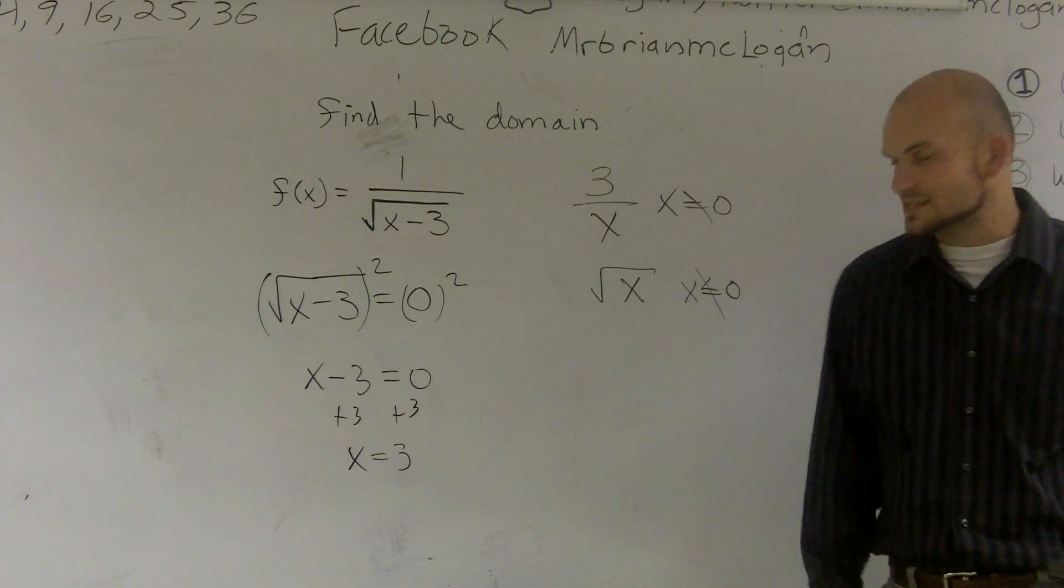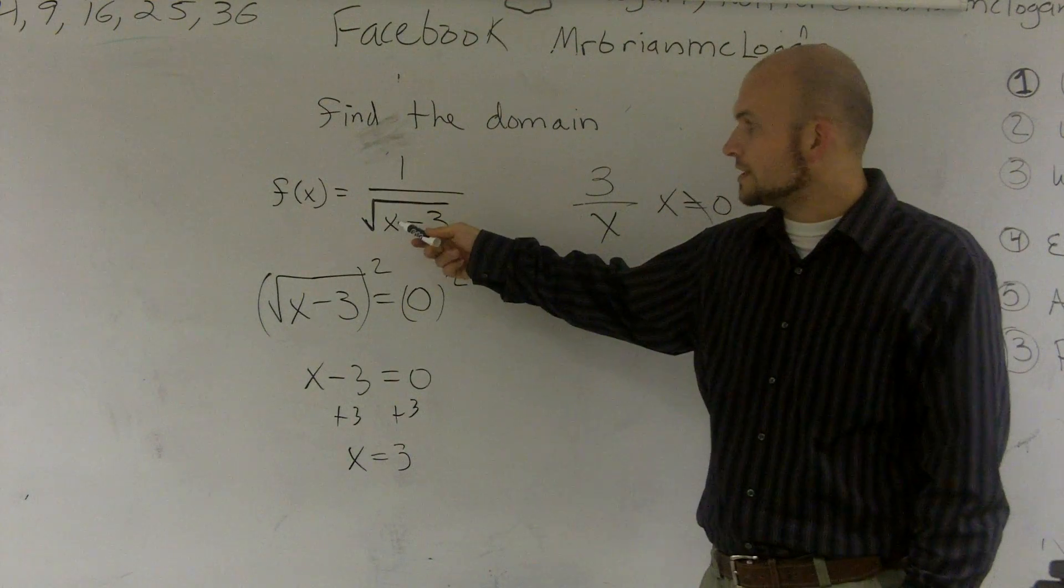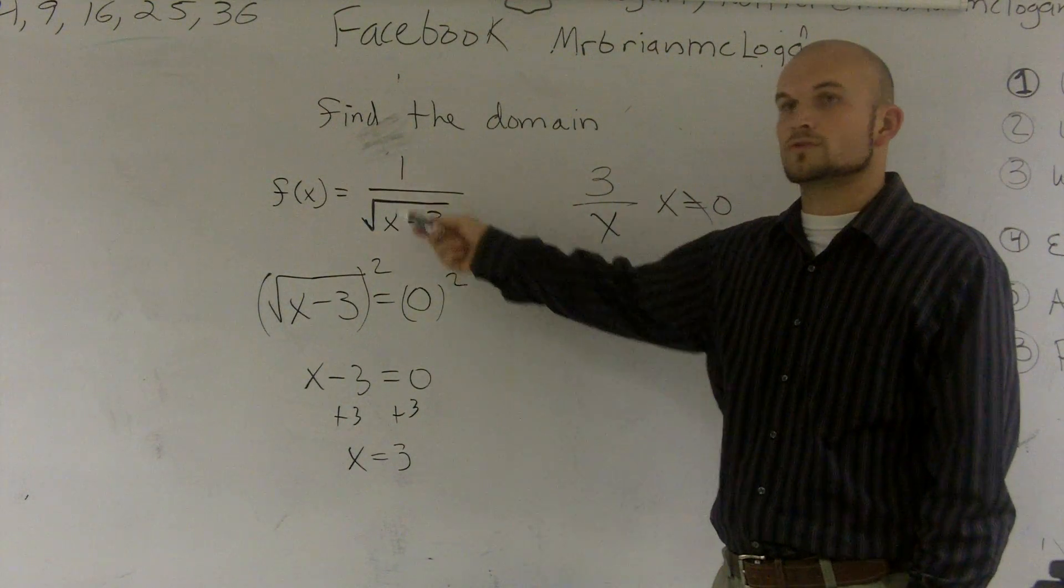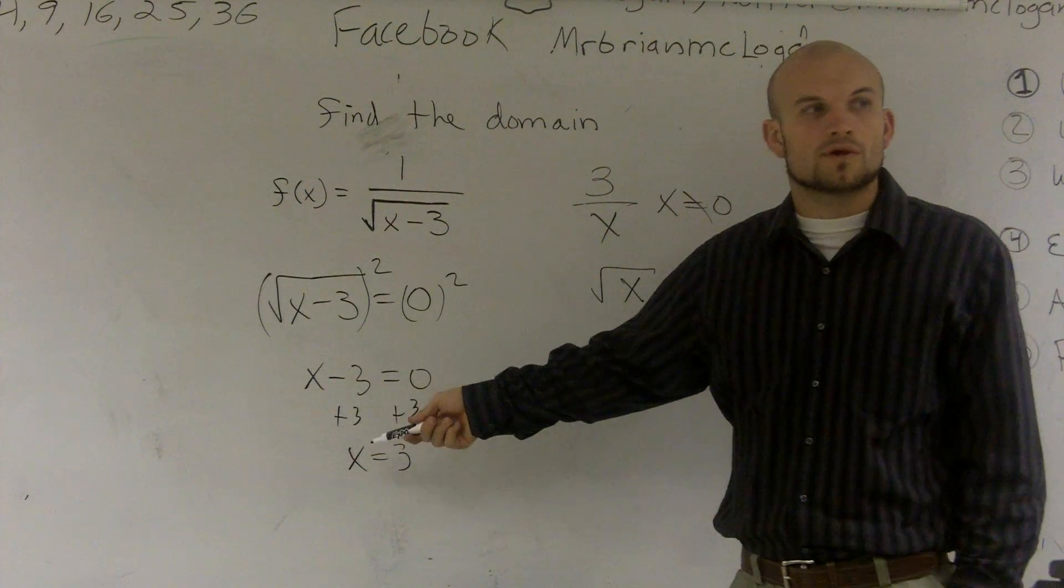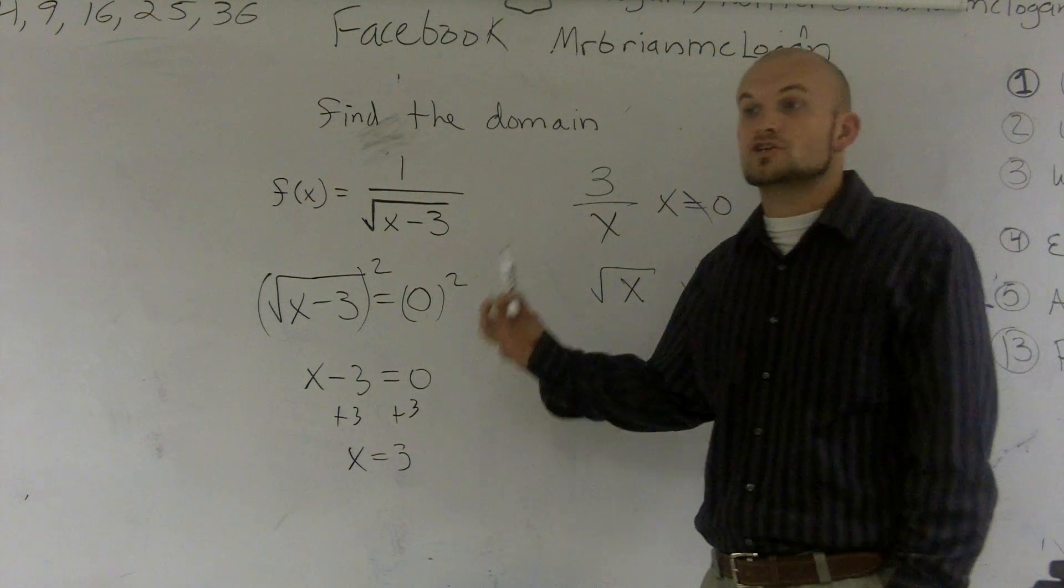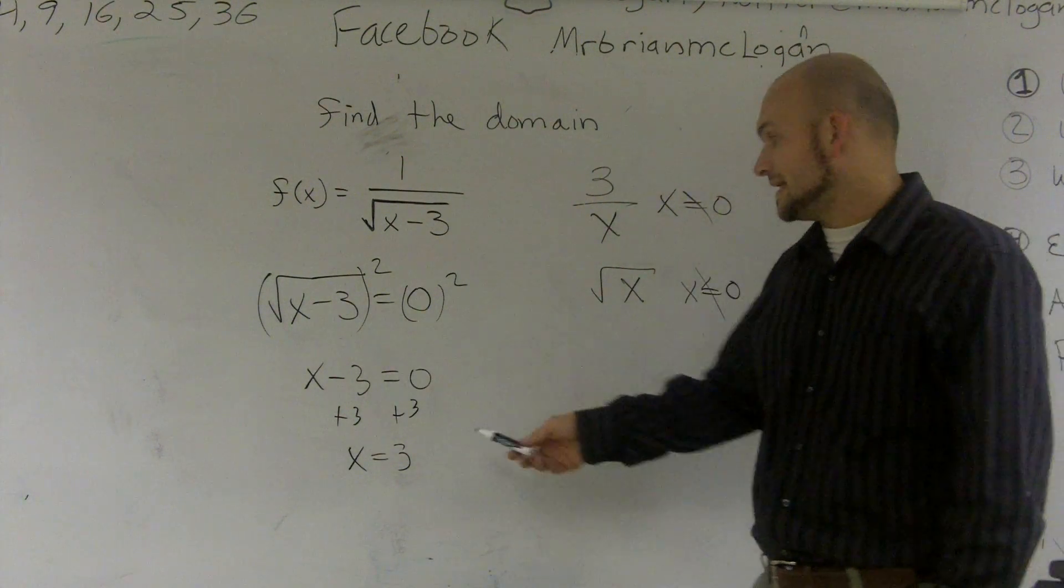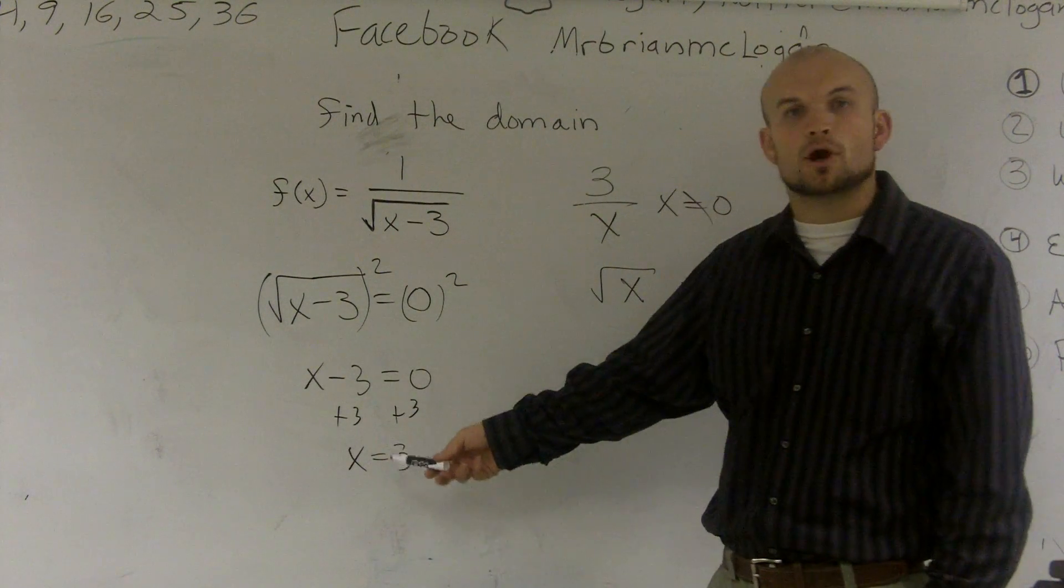So that means x equals 3. And let's test this real quick. If I plug in a 3, I get 3 minus 3, which is 0. The square root of 0 is 0. So when I use 3 for the value, my function is not defined, meaning it's not part of my domain.